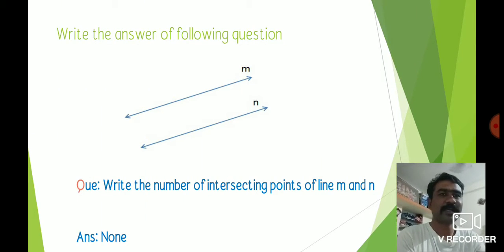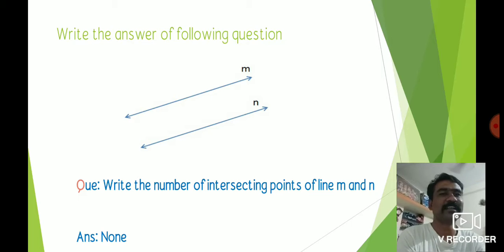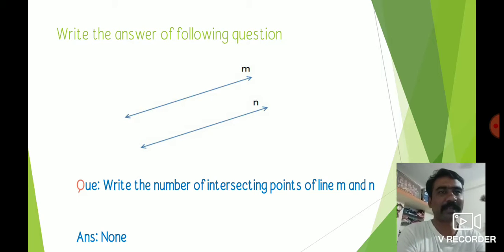There are two lines, line m and n. The question is: write the number of intersecting points of line m and n. The answer is none — there is no intersecting point of line m and n because these lines are parallel lines.